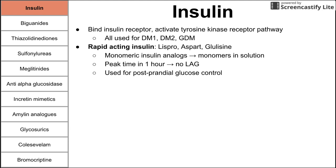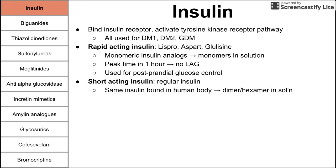These rapid-acting insulins are used for postprandial glucose control — that means controlling your glucose after a meal. You might take these right after, before, or during a meal to help control the postprandial glucose spike. Next we have short-acting insulin, which is just called regular insulin. It's the same insulin found in the human body, and it exists as a dimer or hexamer in solution. It breaks down more slowly, so it reaches its peak in two to four hours.